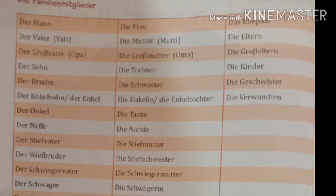We have completed all the conversation of lesson number five, and I hope you have successfully filled the family and standard exercise. Now come to page number 73 and 74, there are some charts. The first chart is about the family Mitglieder. As you know, Familienmitglieder means family members. Here you are going to get information about how you can address your family members. This chart is divided into three parts: masculine, feminine, and plural.